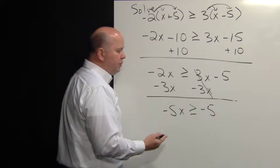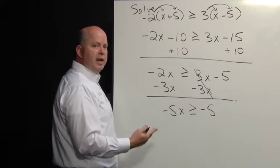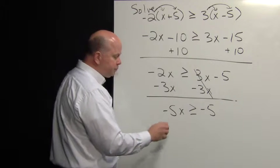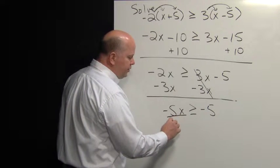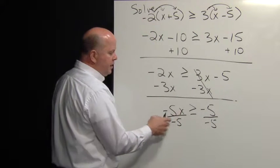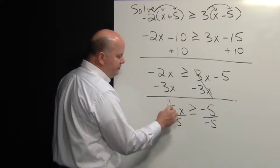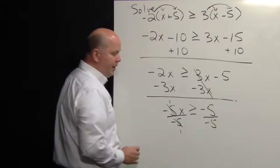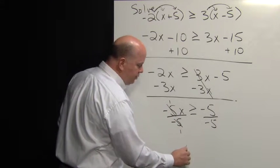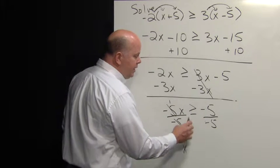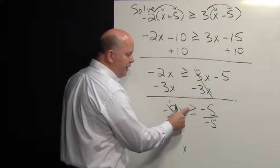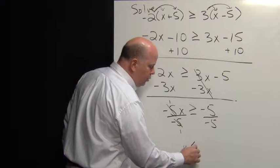Here we're going to use the multiplication property of inequalities, which is also incorporated with division. If we divide both sides by the coefficient of X, we have negative five divided by negative five, which equals one. Then we have one times X, which gives us our X. Now because we're dividing by a negative number, we recognize that we must switch the inequality sign.